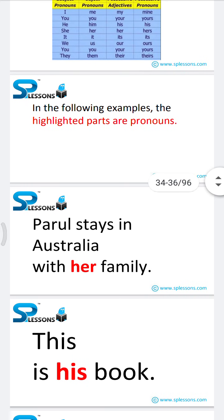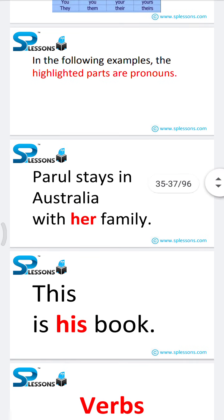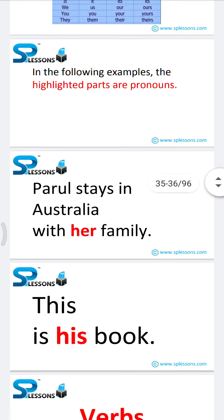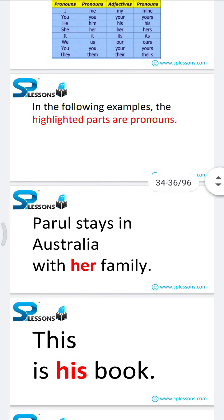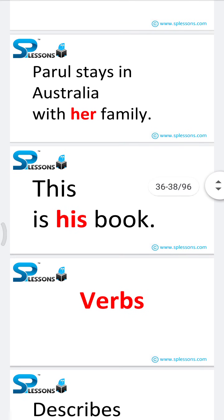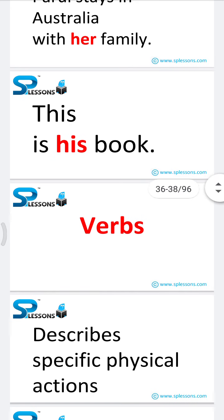In the following examples, the highlighted parts are pronouns. 'Parul stays in Australia with her family' — here 'Parul' is a noun and 'her' is a pronoun. Pronouns are used instead of nouns. 'This is his book' — here 'his' is a pronoun.